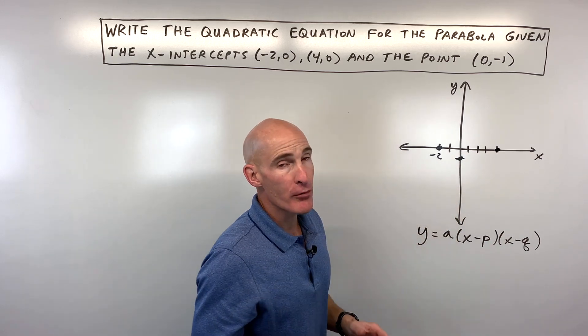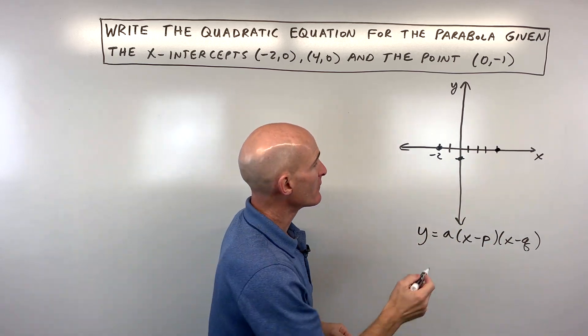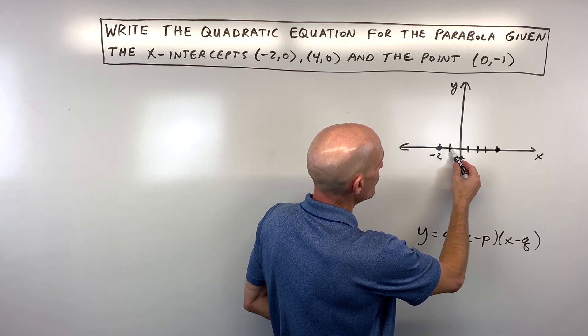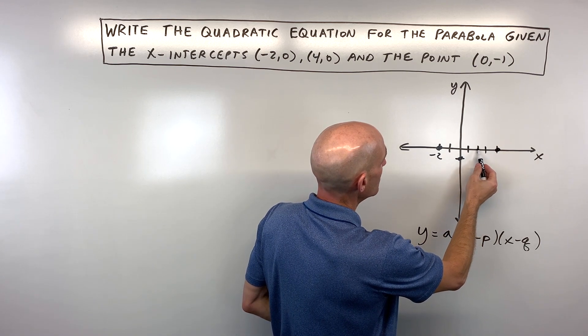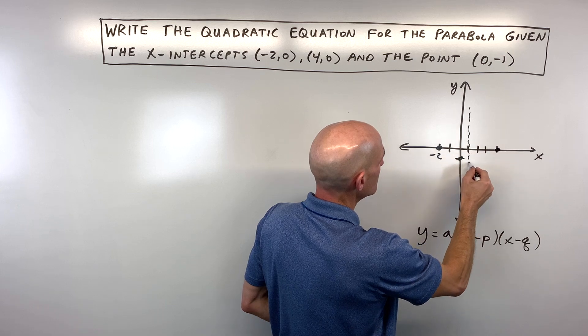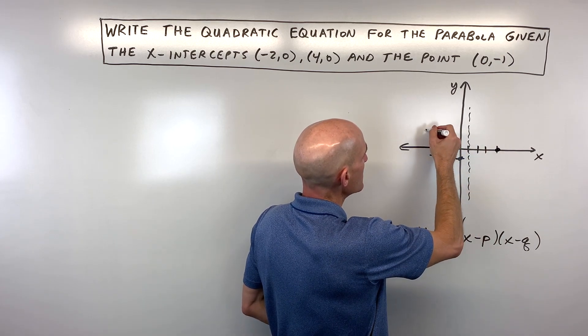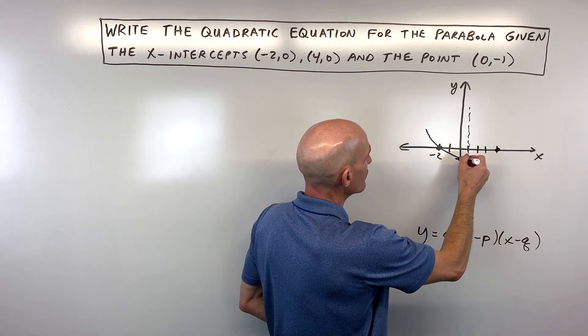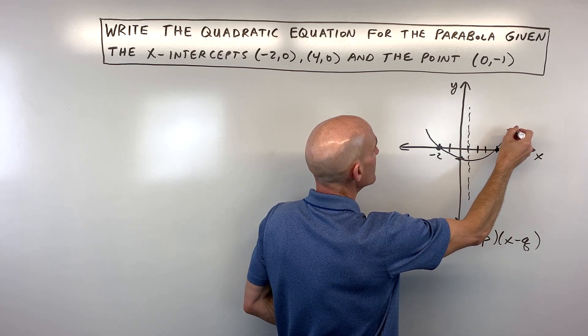Now, we know parabolas are symmetric, right, so we can find the midline if we wanted here. 1, 2, 3, 4, 5, 6, so halfway would be right here. That's our axis of symmetry. So our graph would look something roughly like this.